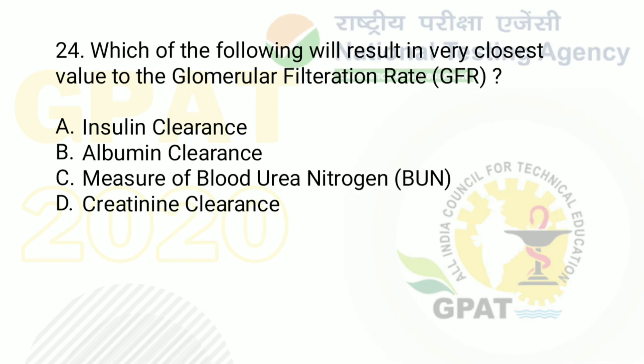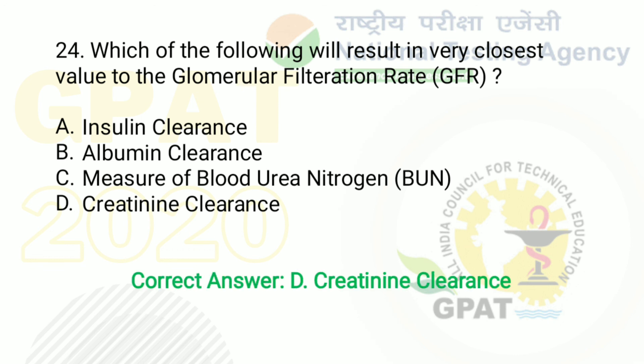Question number 24: which of the following will result in a value very closest to the glomerular filtration rate (GFR)? Option A: inulin clearance. Option B: albumin clearance. Option C: measure of blood urea nitrogen. Option D: creatinine clearance. The correct answer is option D — creatinine clearance.